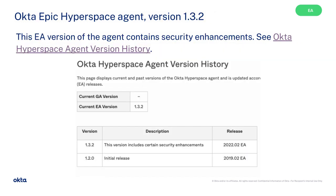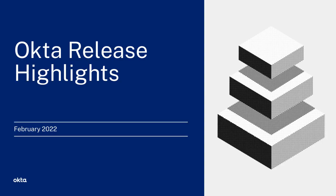The EA version of Okta Epic Hyperspace Agent version 1.3.2 contains security enhancements. And that's your February 2022 release highlights. For additional resources on this release, please be sure to use the URLs in the description below.